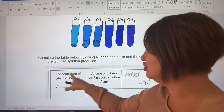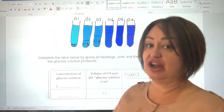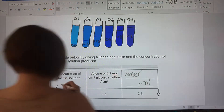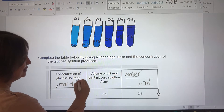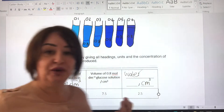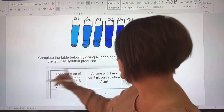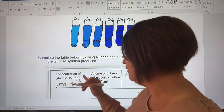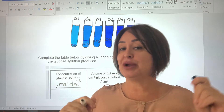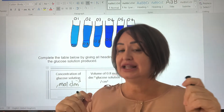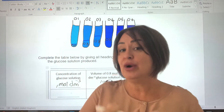Over here it asks for the concentration of glucose solution. We know it's moles per decimetre cubed because it gave us that in the question. So we've got those two headings filled in. We now just need to work out the final concentration of the glucose solution, which is different because in the past we've used v1 times c1 equals v2 times c2 to find a volume — now we're looking for concentration.